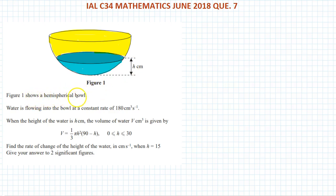The figure shows a hemispherical bowl. The water is flowing into the bowl at a constant rate of 180 centimeter cube per second. When the height of the water is H, the volume of the water V is given by this formula where H is 0 to 30. Find the rate of change of the height of the water in centimeter per second when H is 15.